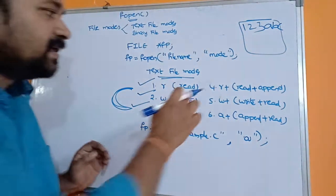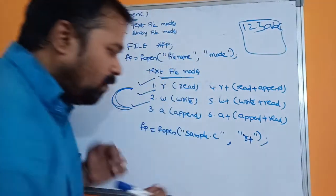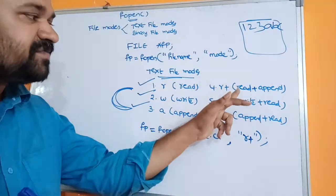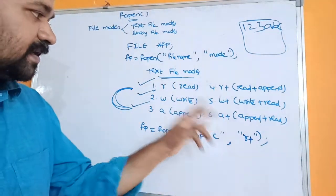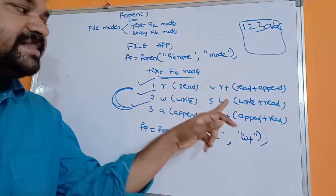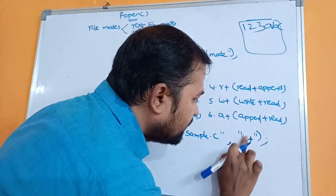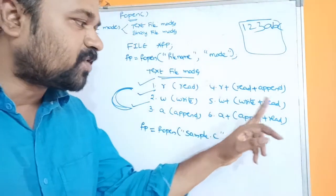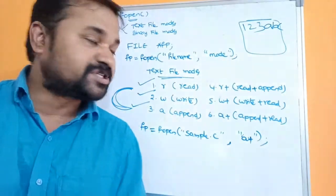Next is R+ mode — if you open a file with R+ mode, we can perform both read and append operations. W+ mode allows both write and read operations. A+ mode allows both append and read operations. This is about text file modes.